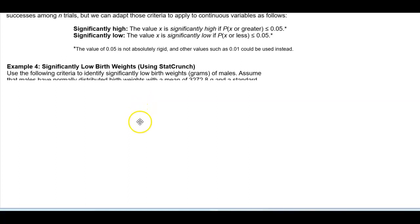So let's take a look at example 4: significantly low birth weights using StatCrunch. Use the following criteria to identify significantly low birth weights of males. Assume that males have normally distributed birth weights with a mean of 3,272.8 grams and a standard deviation of 660.2 grams.